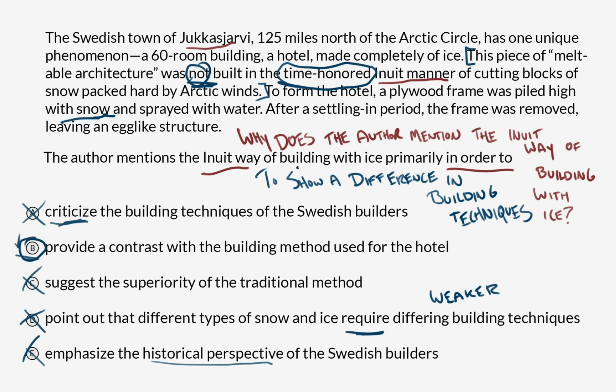When you're presented with a question that asks you to evaluate the purpose of some part of a passage, rephrase the question first as a what, why, or how kind of question: what is it doing, why is the author using it, or how is it being used? Understand its function within the passage, then build your own working model of what the answer could be. Then compare your own-words answer against the choices.